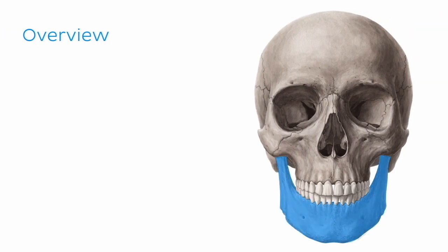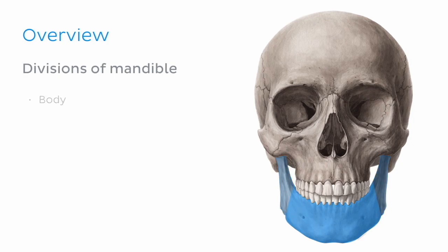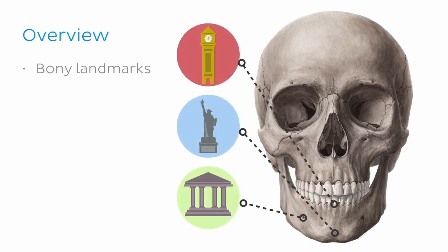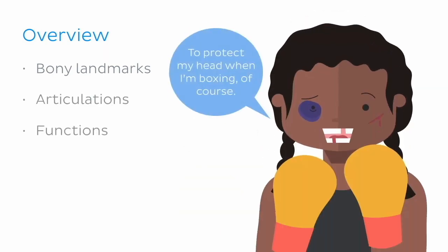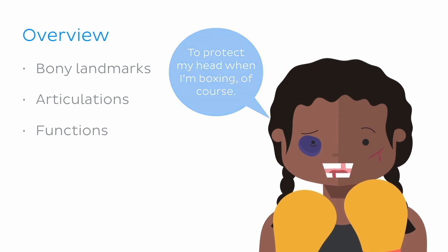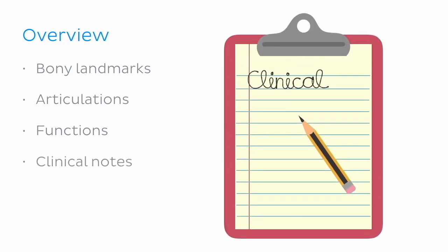So today we're going to learn all about the anatomy of the mandible. We will begin with taking a look at the main divisions of the mandible, which include the body of the mandible and the two rami. We'll explore the bony landmarks and foramina within each division, and also take a look at its adjacent articulations and main functions. Finally, we'll finish off today's tutorial with a quick look at some clinical notes on the mandible to help consolidate our understanding.